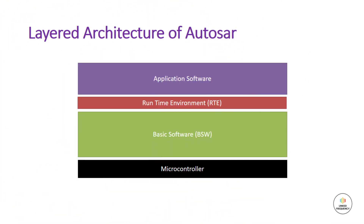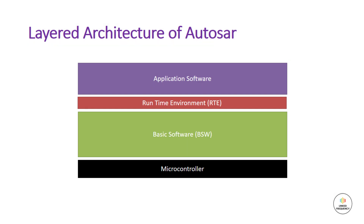Moving on, let us see the layered architecture of AutoSAR. The AutoSAR architecture is based on a three-layered architecture module, developed jointly by the stakeholders of the automotive industry including the automobile manufacturers, the suppliers, and the tool developers. This is a layered architecture with three components: the application layer, the runtime environment, and the basic software layer. Each layer has its own different responsibilities and functions.